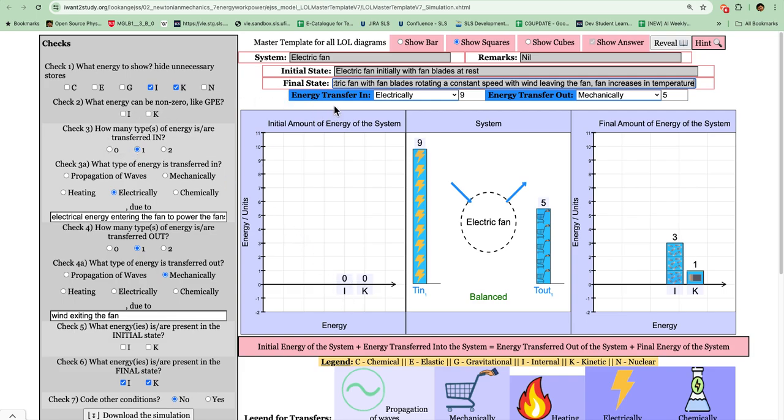How many energy transfer in? In this case I'll select one because there is an electrical energy store. Okay, so I'll select one and then I will select the appropriate radio button and then followed by the scaffolding words to say that electrical energy enters the fan to power the fan.